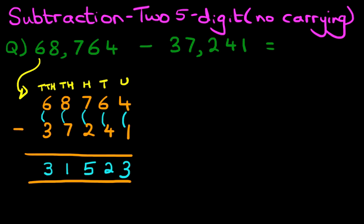And we have our answer. It is 31,523. That is correct. So that is how we do subtraction of two five-digit numbers with no carrying using the vertical format.